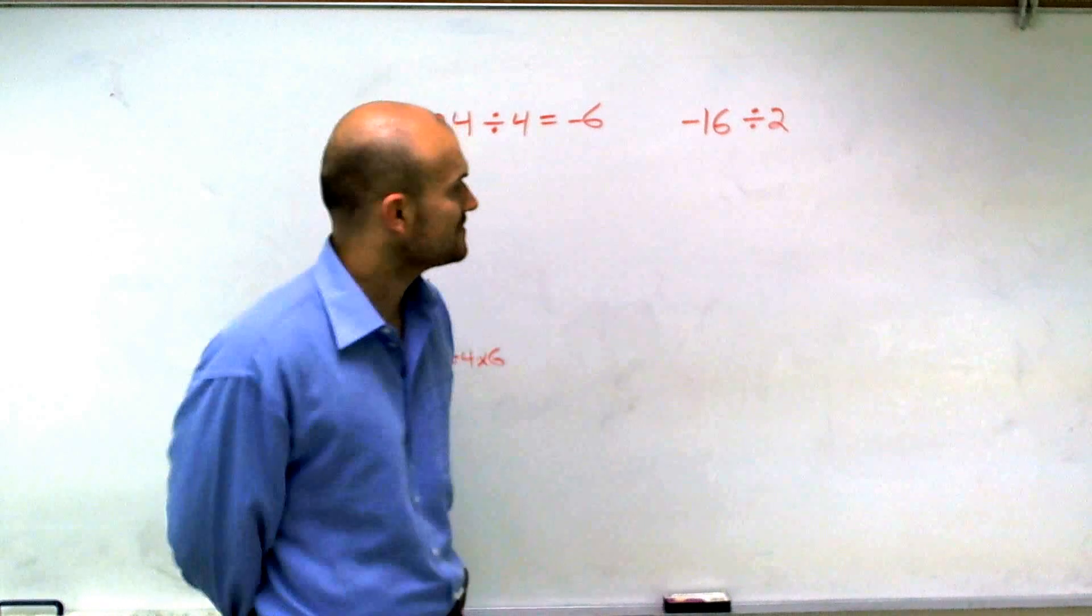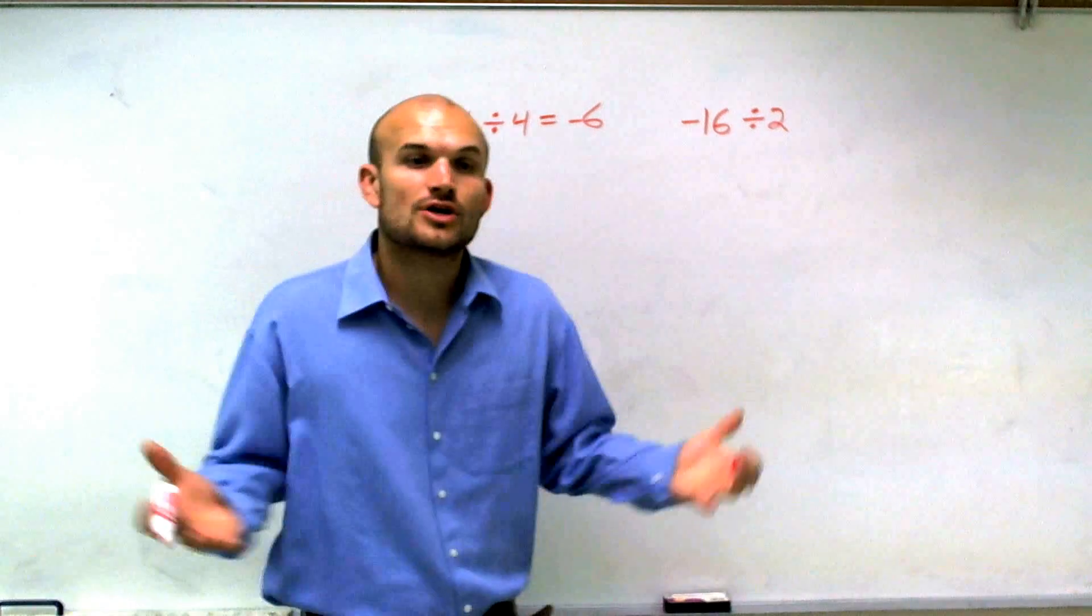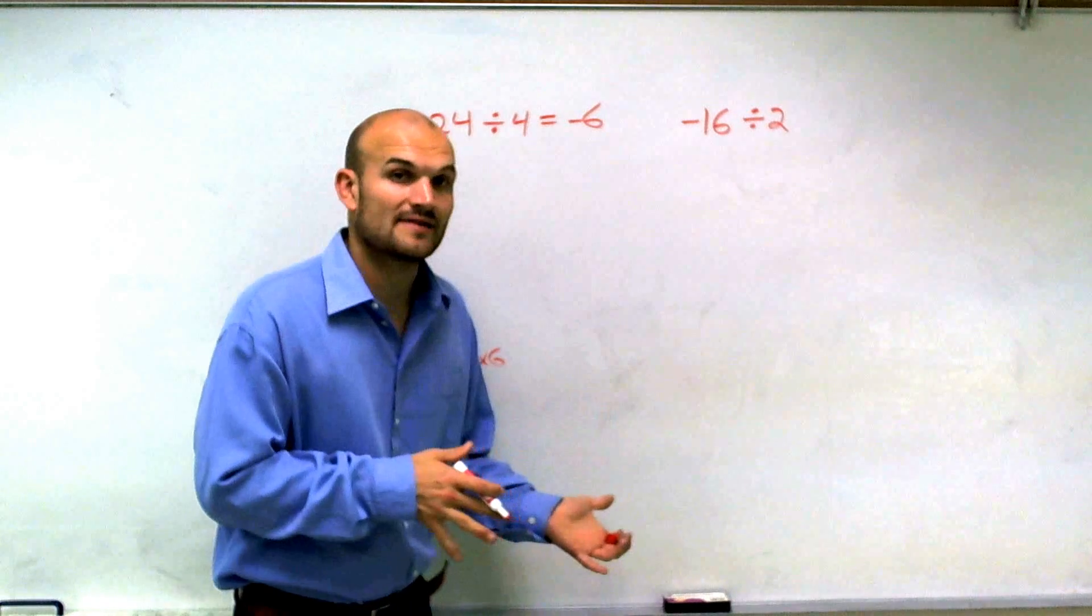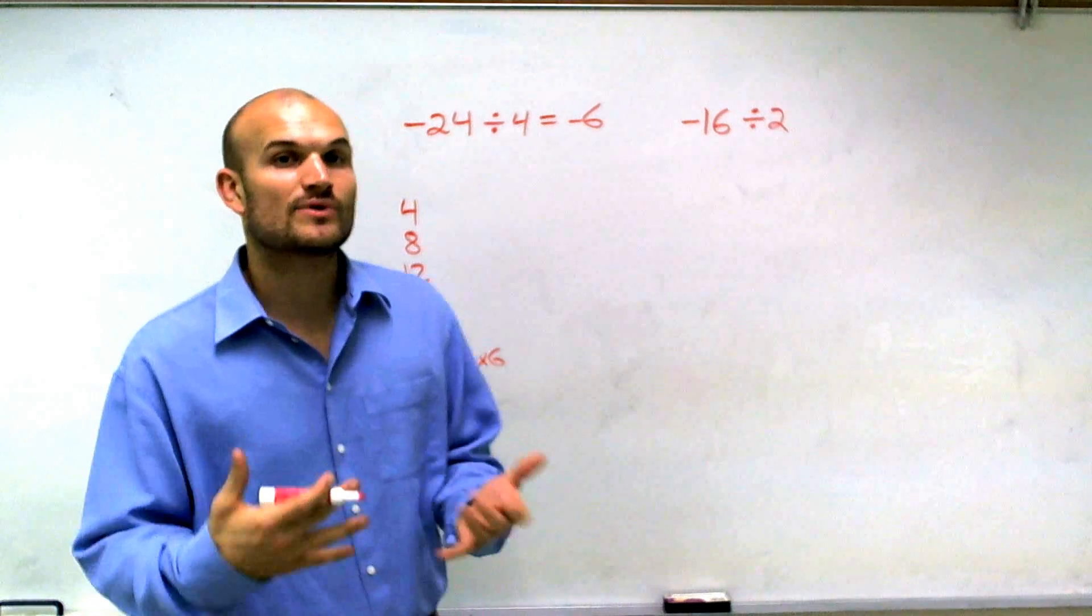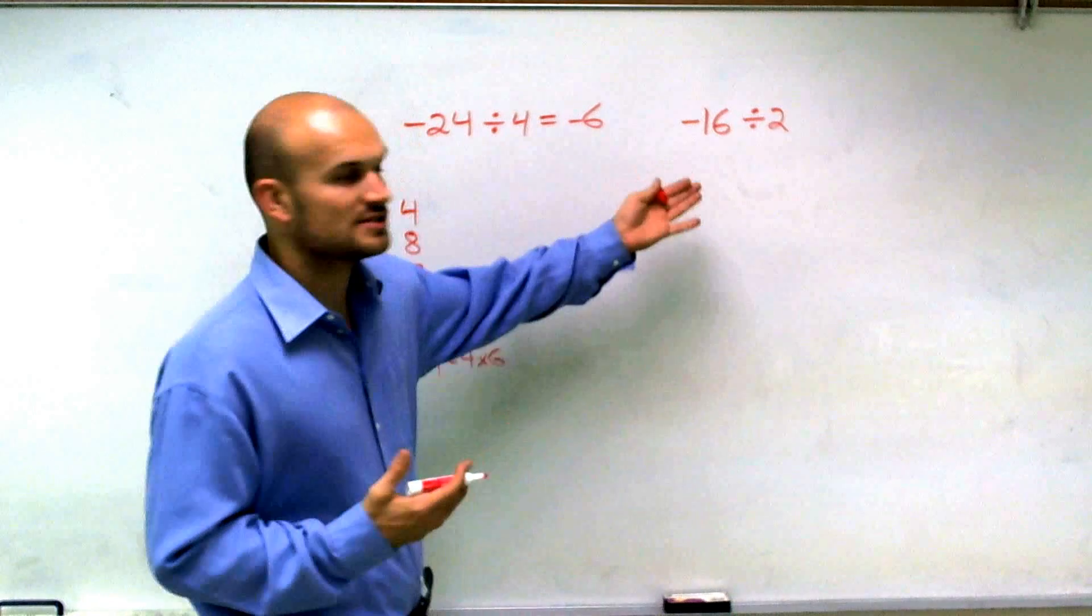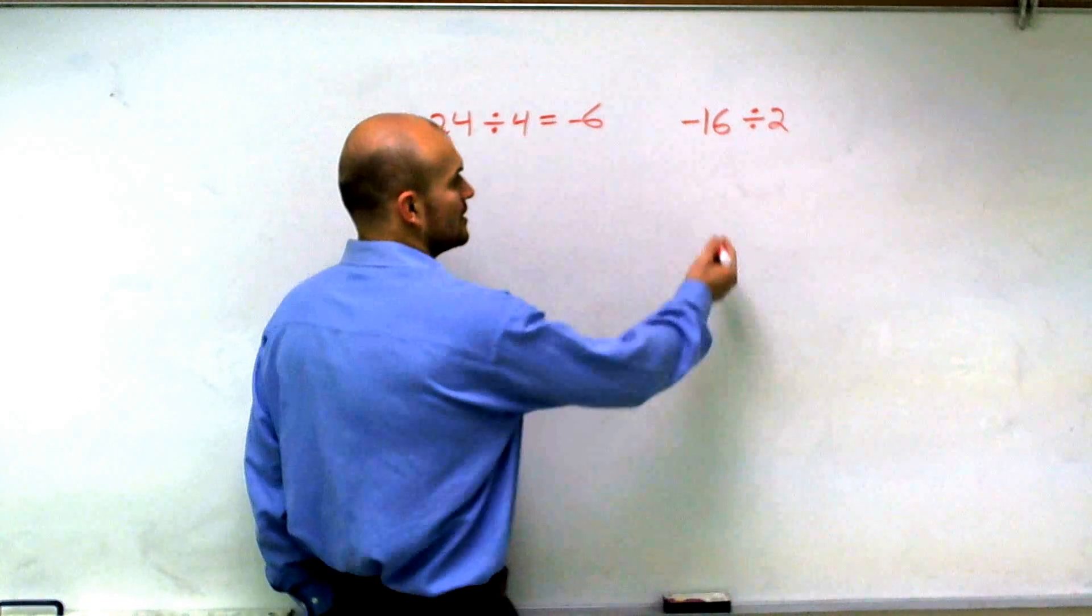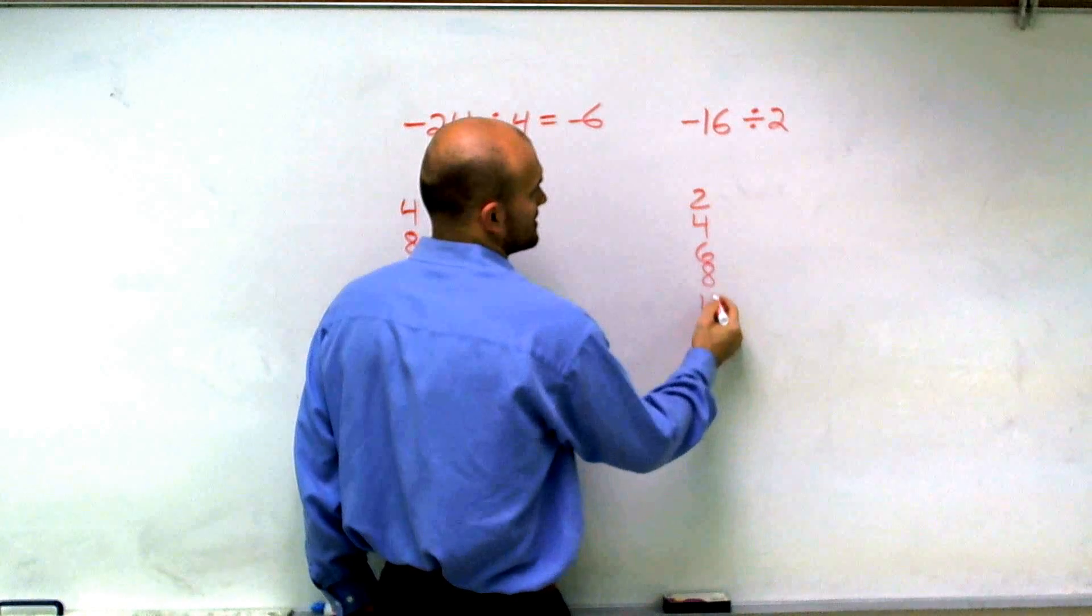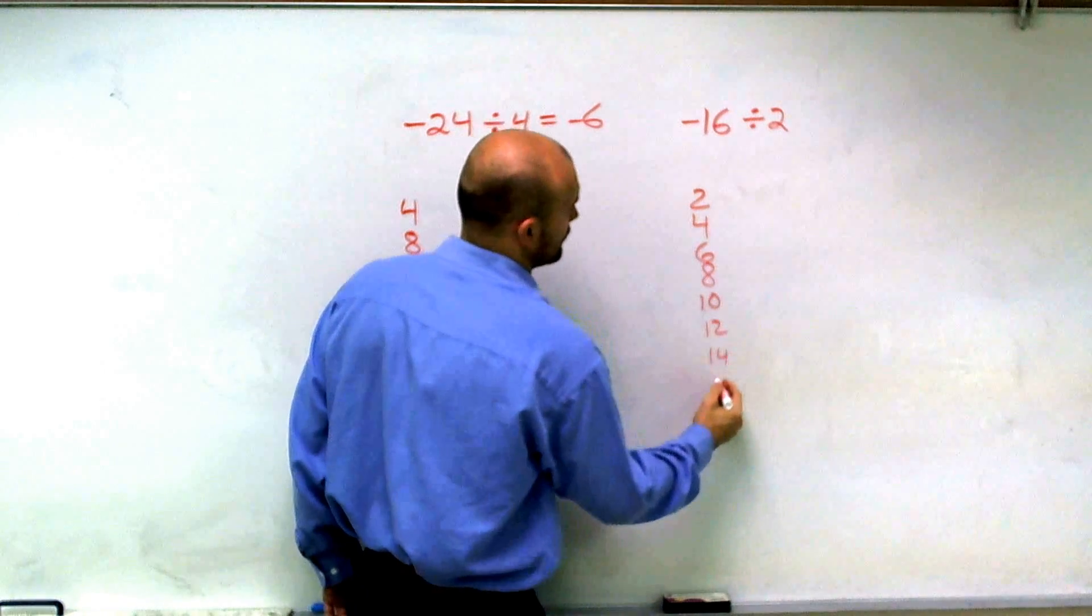Now let's look at another answer: negative 16 divided by 2. Again, what we're asking is how many times does 2 go into negative 16? Again, I'm going to reverse the division by thinking about multiplication. So I'll just write the multiples: 2, 4, 6, 8, 10, 12, 14, 16.